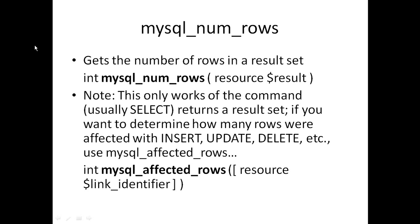This only works if the command returns a result set — usually SELECT. If you want to determine how many rows were affected using INSERT, UPDATE, or DELETE, use mysql_affected_rows. The function for mysql_affected_rows is essentially the same, except you don't actually have to pass it a resource link identifier because it'll just use the open connection.